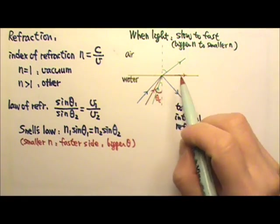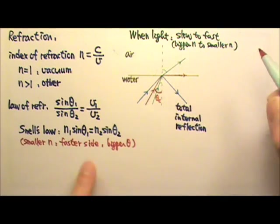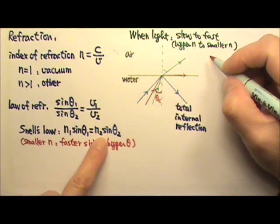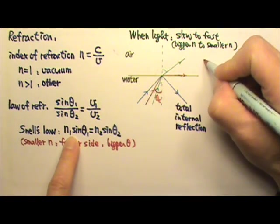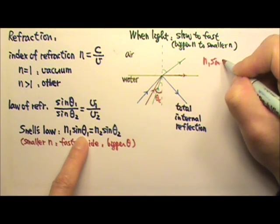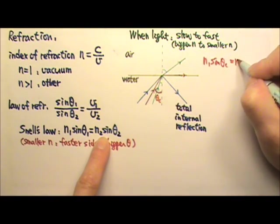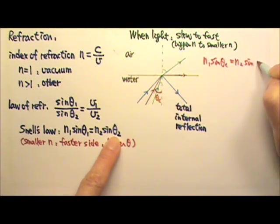At the critical angle, the angle of refraction is 90 degrees. So we can use Snell's law to find the critical angle. So n1 sin θc equals n2 times sin 90 degrees.